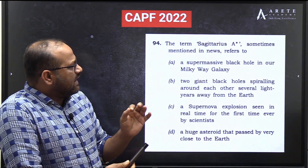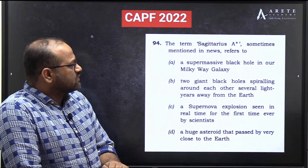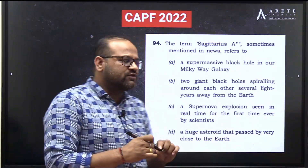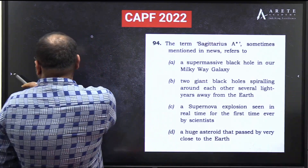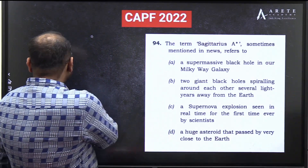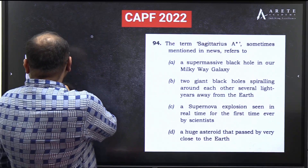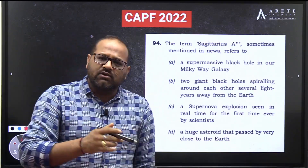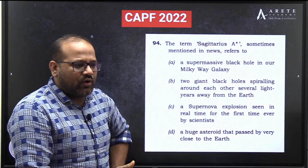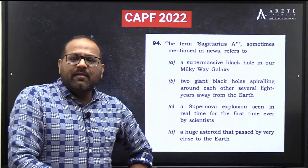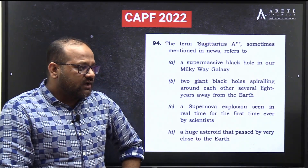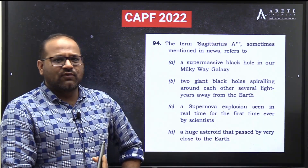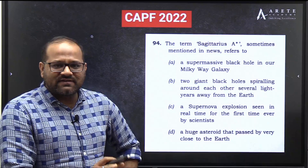The question is: 'The term Sagittarius A*, sometimes mentioned in news, refers to what?' UPSC asks such questions because these are recent developments, and importantly, space-related topics keep coming up. UPSC has asked about the expansion of the galaxy, Einstein's theory of relativity, rings, Goldilocks zones in the past.